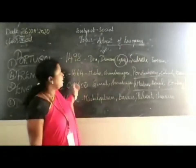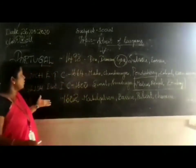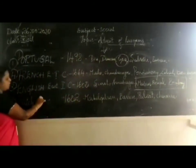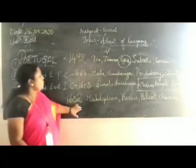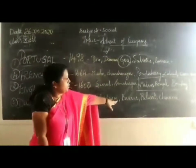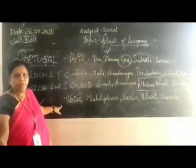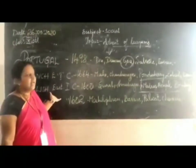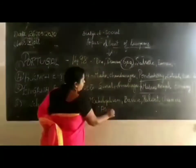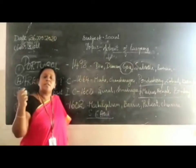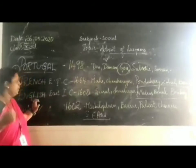The Dutch East India Company also arrived in India. Their main focus was on trade, but they had trading centers in India too — at places like Masulipatnam, Pulicat, Kasimbazar, Chinsura, and others. However, they never stayed in India for a long period. One reason was the powerful French and English competition; the other was that they found a new island in Southeast Asia — Indonesia. So they shifted their focus and started colonizing Indonesia, and this country eventually lost its power in India.